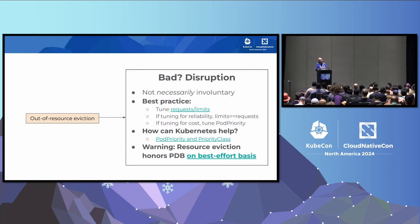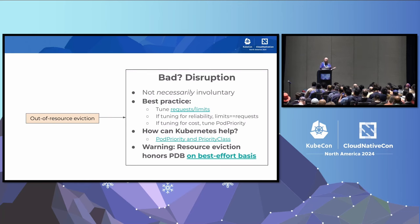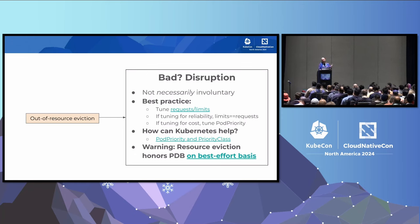Resource evictions are one of the cases where PDB is honored only on a best-effort basis. In particular, when a node is running hot and has to evict something immediately, PDB just isn't really honored at all.